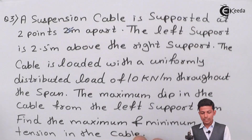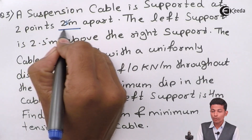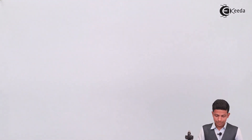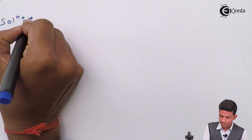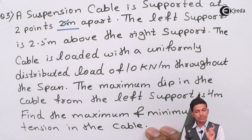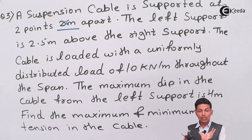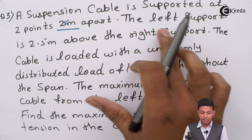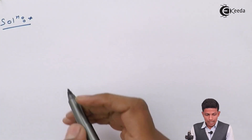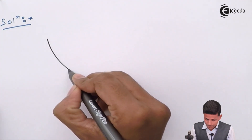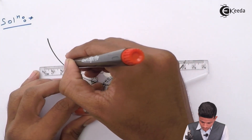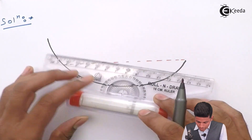Let's start with the solution and draw the diagram. Note: the distance is 25 meters, not 2 meters — that was a mistake. The cable is supported at A and B, with the left support 2.5 meters above the right support, so the left part is elevated. The diagram shows points A, B, and C, with the left support higher by 2.5 meters.